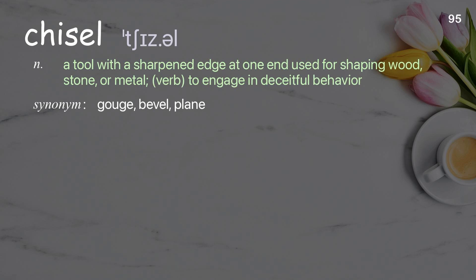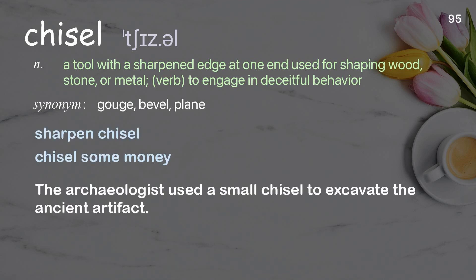Chisel: a tool with a sharpened edge at one end used for shaping wood, stone, or metal; verb meaning to engage in deceitful behavior. Examples: sharpen chisel, chisel some money. The archaeologist used a small chisel to excavate the ancient artifact.